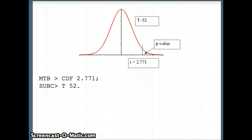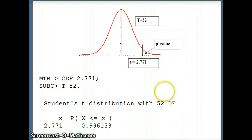We need to figure out the area to the right of 2.771 on a t-52 distribution. To answer that question, we're going to ask Minitab CDF 2.771. What CDF does is it gives us all of the area to the left. But we know that the entire area under the curve is 1, so with a little bit of work, we can figure out what that p-value is going to be.